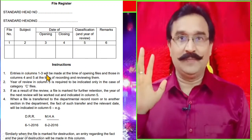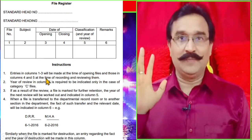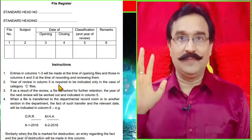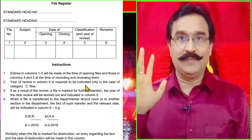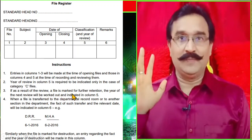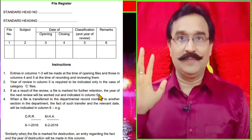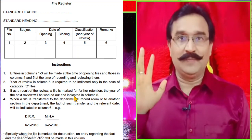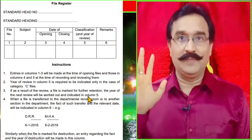Entries in columns 1, 2, and 3 will be made at the time of opening files, and those in columns 4 and 5 at the time of recording and reviewing them. Year of review in column 5 is required to be indicated only in the case of category C files. If as a result of review a file is marked for further retention, the year of next review will be worked out and indicated in column 5.